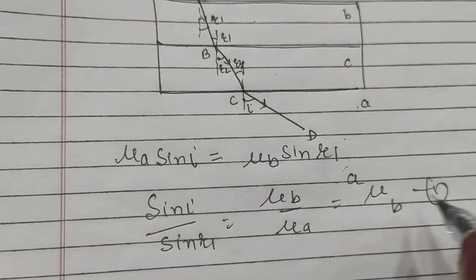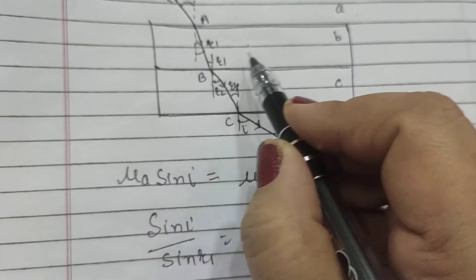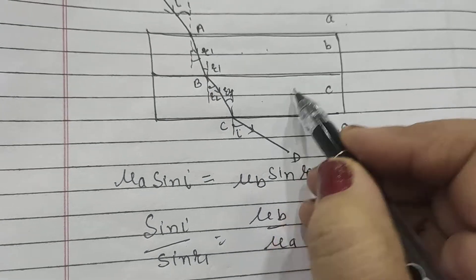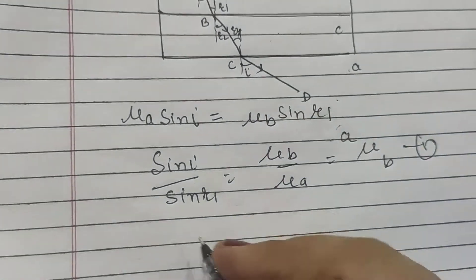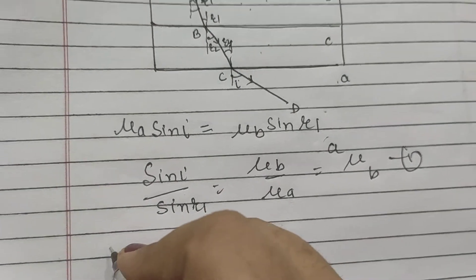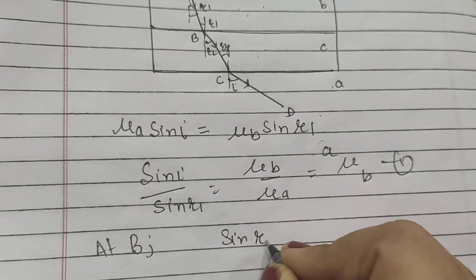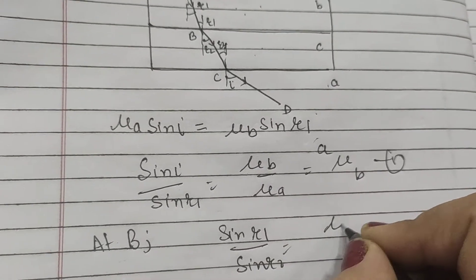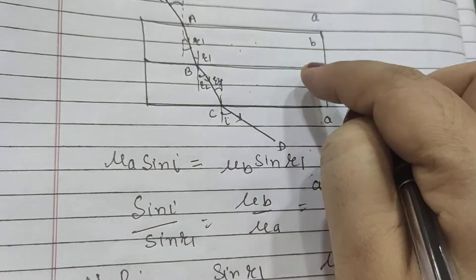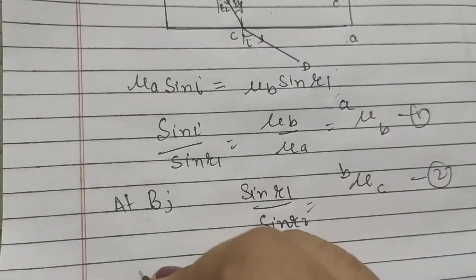Now similarly, when we apply Snell's law at B, light is entering from B to C. The angle will be sine R1 divided by sine R2. At B this is sine R1 divided by sine R2, which is equal to mu B to C. This is number 2.